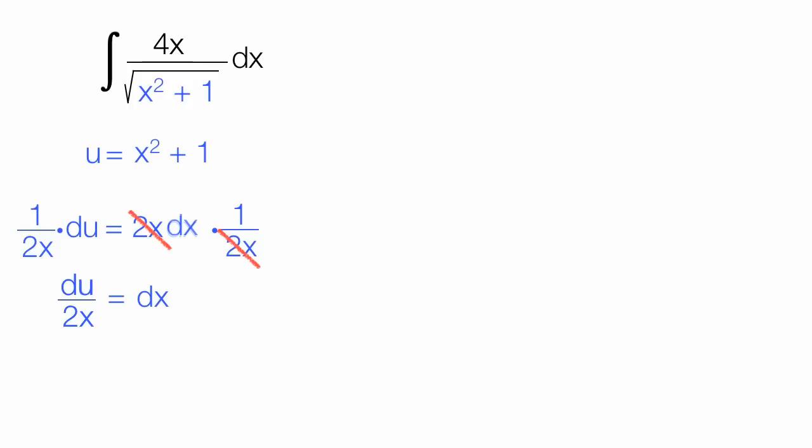Let me copy this 4x divided by the square root of x squared plus 1 over. Right where this x squared plus 1 is right there, I'm going to put u. Like that. And where there's dx, I'm going to put du over 2x.